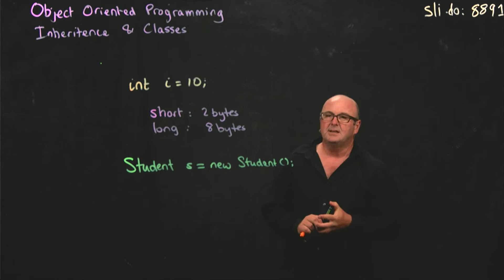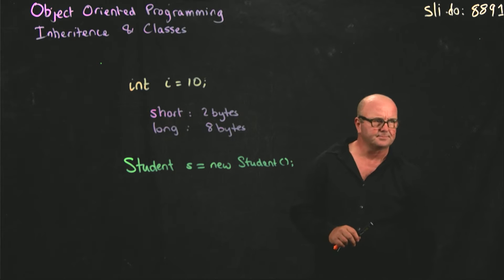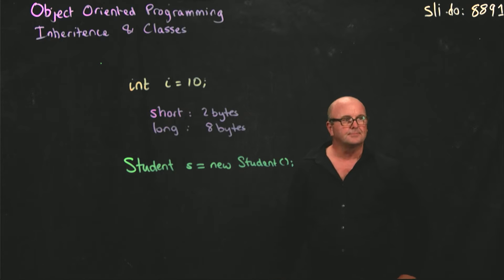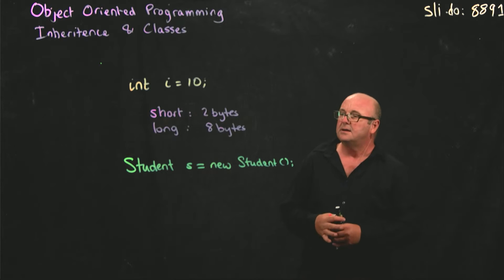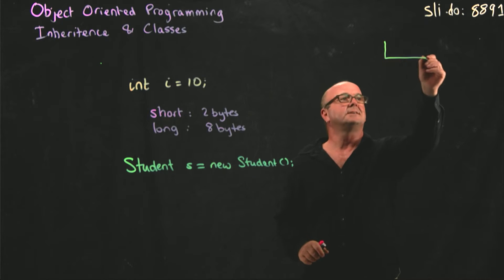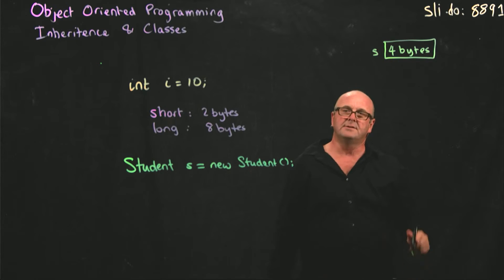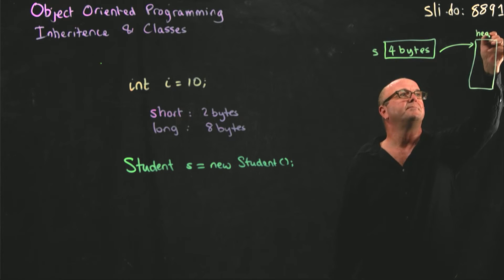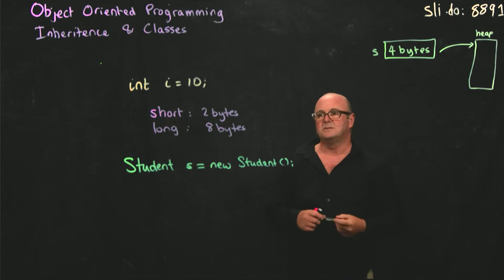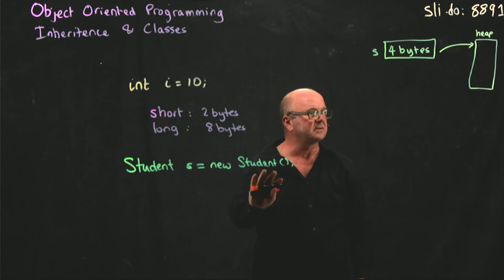It depends on the object, and what happens is the Java virtual machine takes a block of four bytes for s, and those bytes point to a space on the heap that are used to store everything associated with whatever is in the student class.